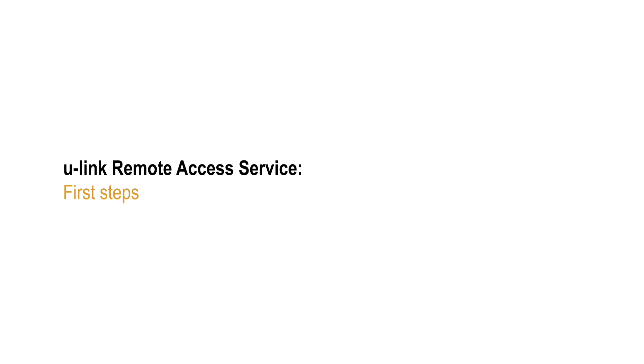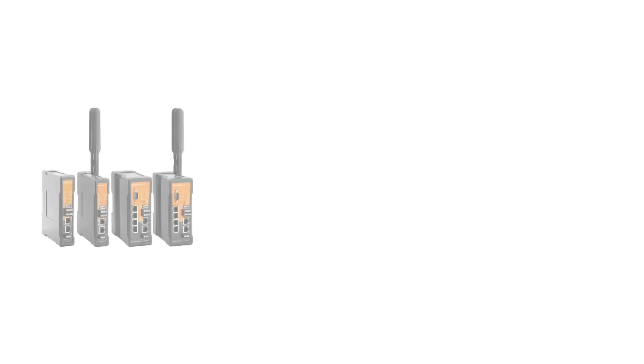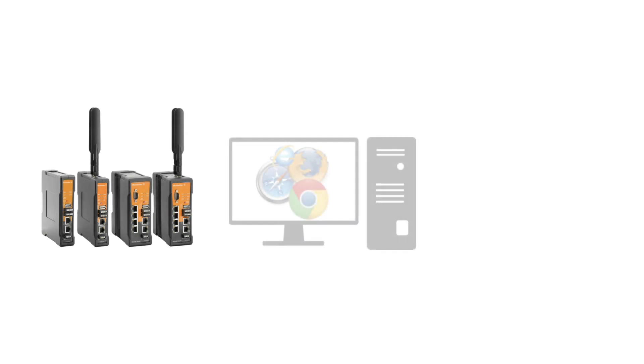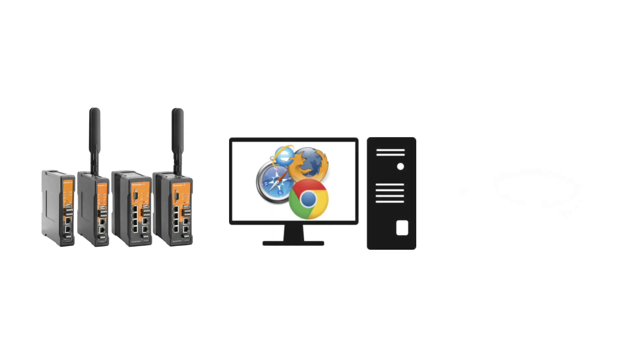In this video, we will guide you through the steps for your first remote access with U-Link. To do so, you need a Weidmüller security router with VPN functionality, a Windows PC with a web browser, and last but not least, internet connectivity.